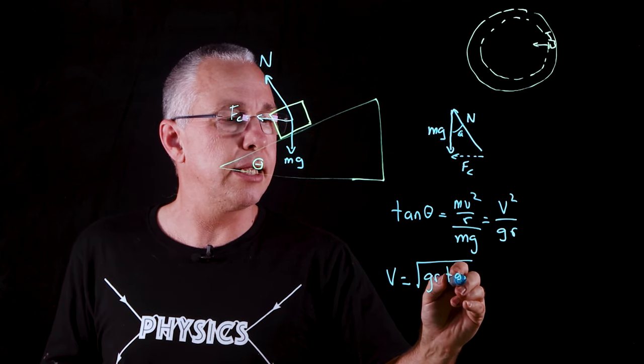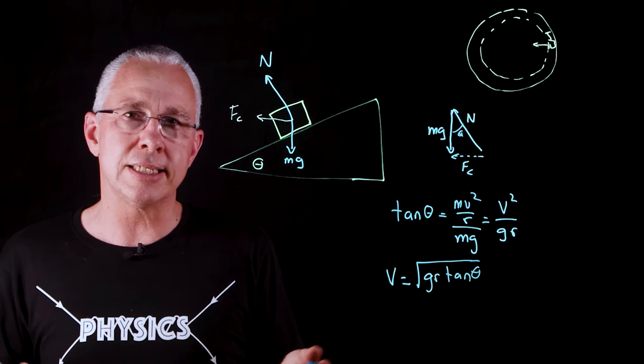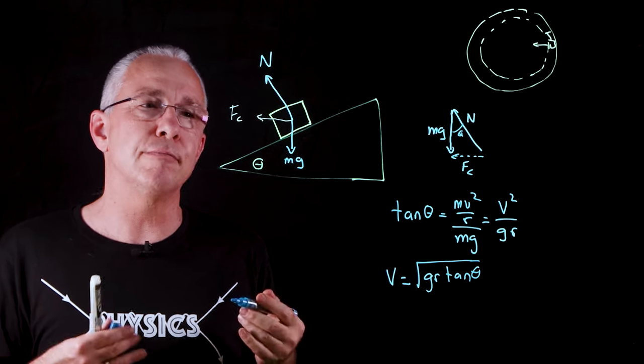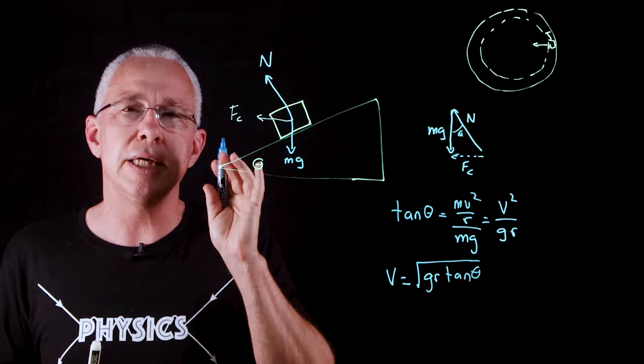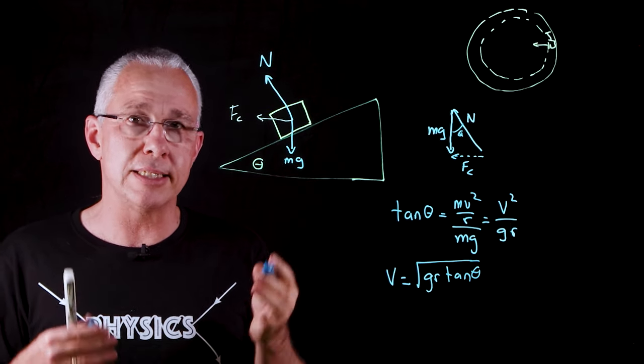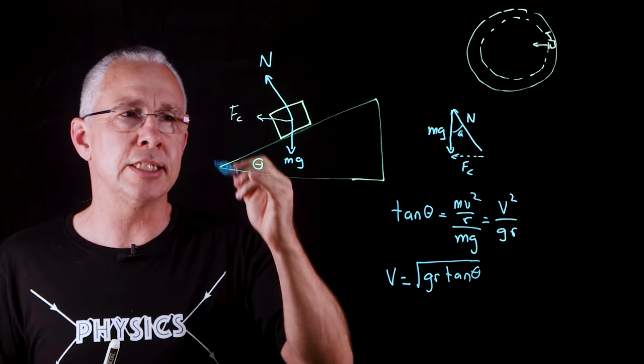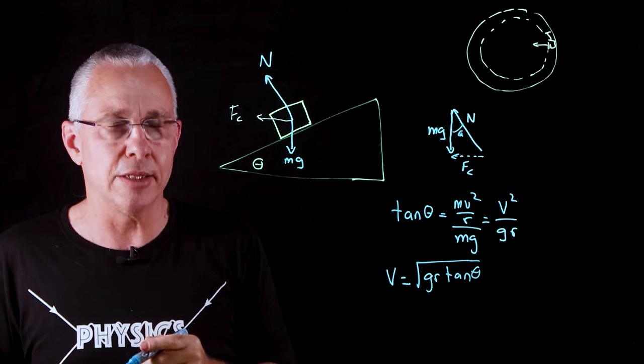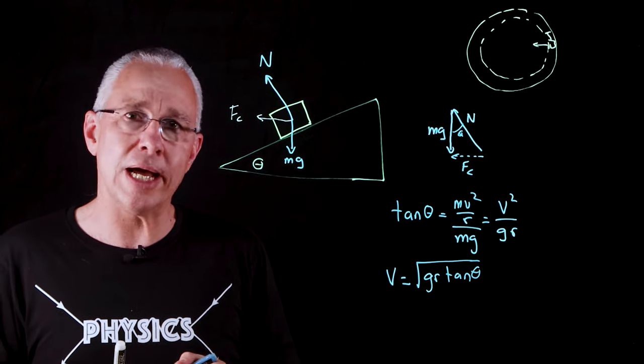What you notice straight away is that the mass is not in the formula anymore. We say it is independent of mass. The velocity of an object that is able to stay in circular motion is not dependent on its mass in this particular case. If the velocity increases it will slide up the hill, if the velocity decreases it will slide down the hill, but mass plays no part. Now that's one way of trying to resolve it using vector analysis.